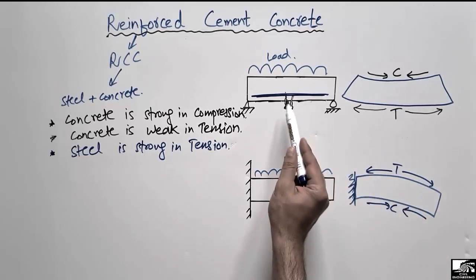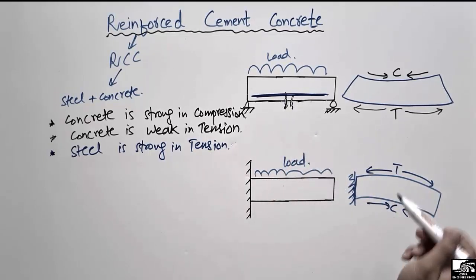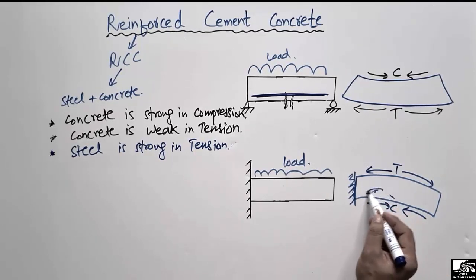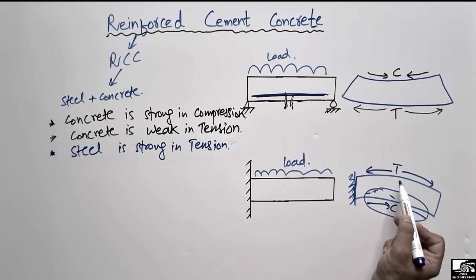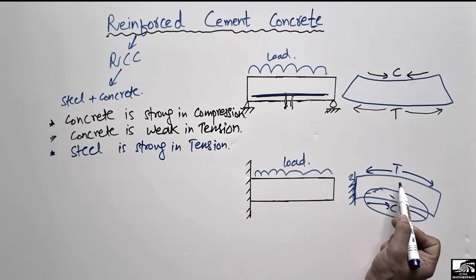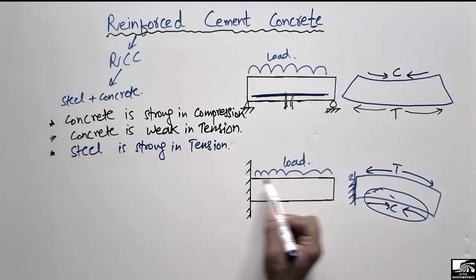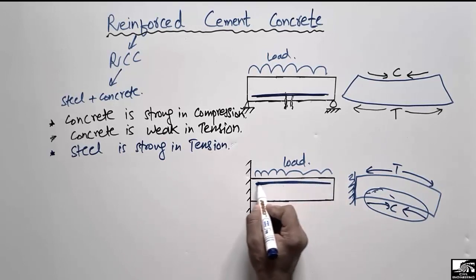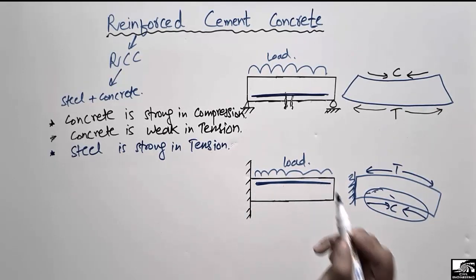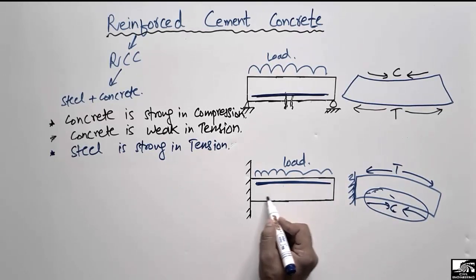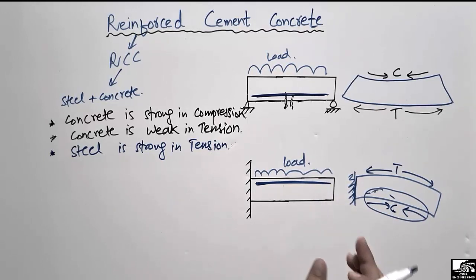Since concrete is strong in compression, we don't need to provide any steel bar at the lower portion of the cantilever beam. But at the top portion, there are tensile stresses, so we must enhance the tensile capacity by providing the steel bar at the top. The steel bar at the top takes the tensile stresses, and no steel is needed at the bottom where compression exists.